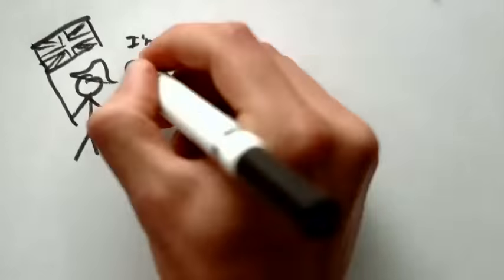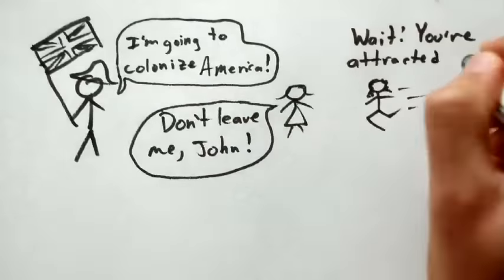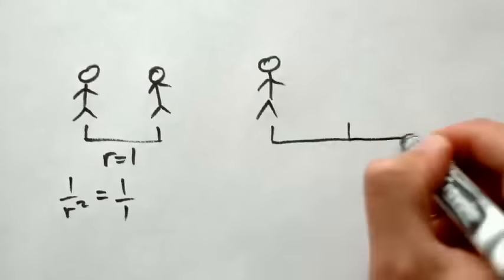In the 17th century, Isaac Newton discovered that the strength of the gravitational force decreases by the square of the distance between two objects. So if you're twice as far away, gravity is only one-fourth as strong.